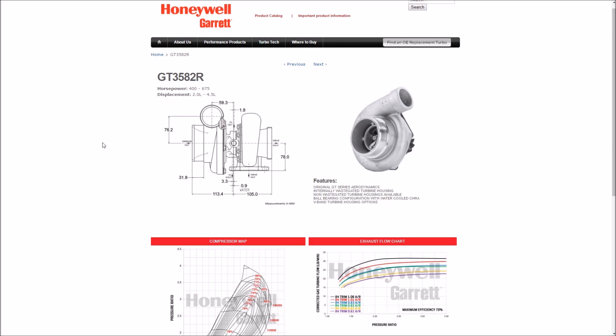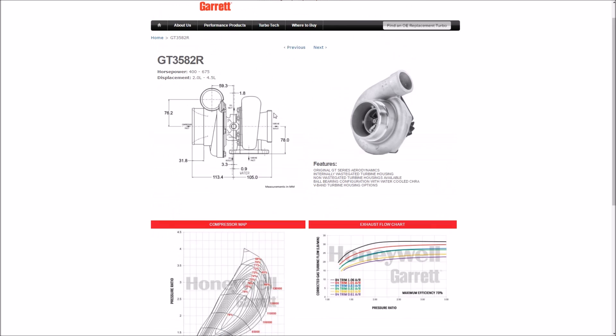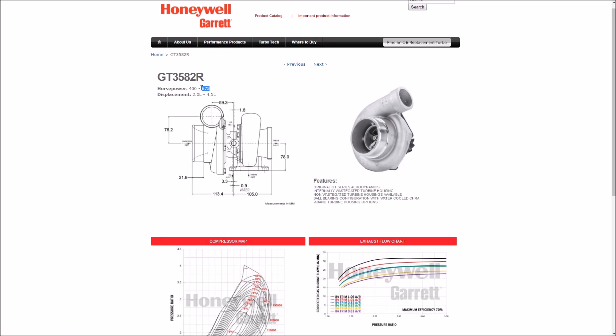Now I'm going to show you guys how to use the information that you got from the Excel file or from the calculations yourself. Here's a turbo I've already selected to be appropriate for my application. This is a GT 35 82 R, and this even estimates horsepower 400 to 675.